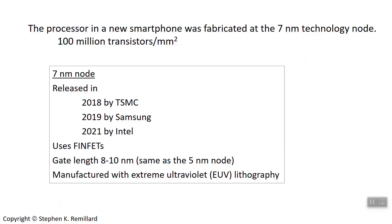The gate lengths are around 8 to 10 nanometers in the 7 nanometer node, indicating that gate length is not keeping up with the node number. The 5 nanometer node, already rolled out by TSMC, also has 10 nanometer gates. The 14 nanometer node had gate lengths ranging from 18 to 30 nanometers depending on who made it, so 10 nanometers is a significant improvement, but still not keeping up with the node number.